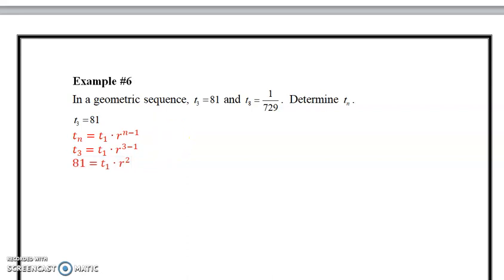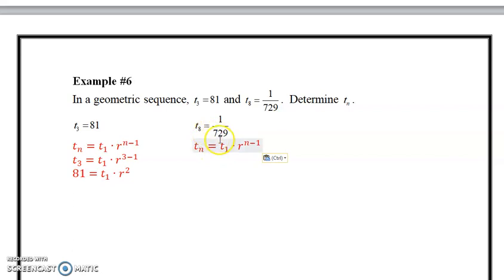Okay. Now we'll do the same thing again. This time we'll do it with the eighth term, 1 over 729. Don't know the first term, don't know R, but we know n is in this case 8. Let's simplify this. Substitute in the term itself. So we know this term here now is a fraction. It's 1 over 729. Replace it with the eighth term. And 8 subtract 1 is 7. So now we have two formulas, both in terms of T₁ and R.